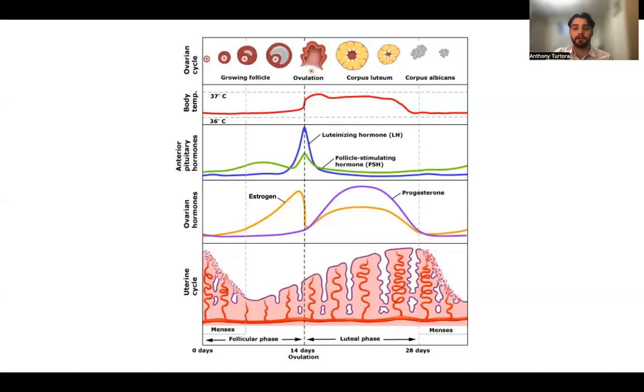Moving back to the luteal phase, our follicle atrophies into what's called the corpus luteum. Due to the high LH and FSH levels, the corpus luteum secretes progesterone. You can see here looking at the ovarian hormones that progesterone levels are increasing. Progesterone has a negative feedback effect on gonadotropin-releasing hormone, luteinizing hormone, and follicle-stimulating hormone. Therefore, the levels of these three hormones begin to drop. However, progesterone is high, so now we see the endometrium is getting bigger.